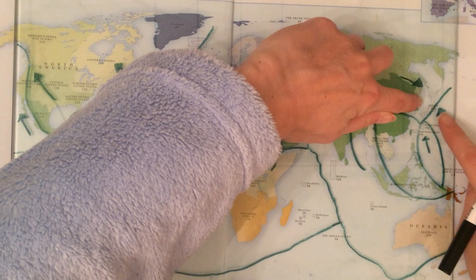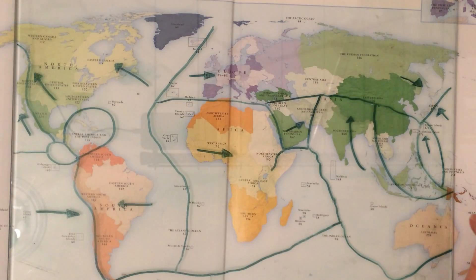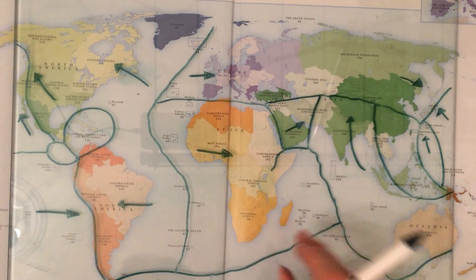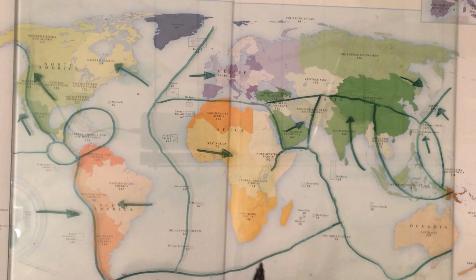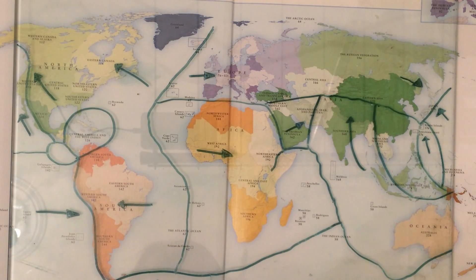And we've got the Eurasian plate moving into the Pacific plate there. So as you can see these pieces of crust, these large segments of crust are moving around on the earth and they're either moving together which we call a destructive plate margin or they're moving apart which we call a constructive plate margin.